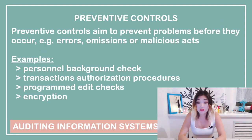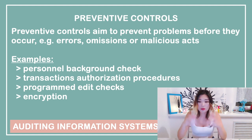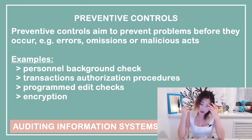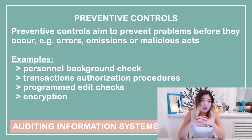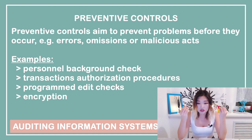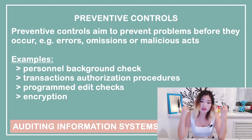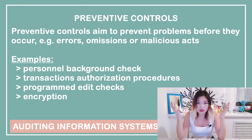Preventive controls, as you can get from the name, target to prevent a problem. A problem can be a human mistake, a system error, or intentional damaging actions. Some examples of preventive controls include personal background checks, processes and procedures for the authorization of transactions, system program checks, access control software, and encryption mechanisms.